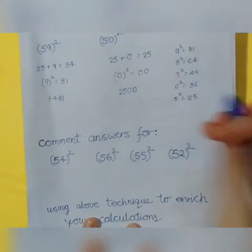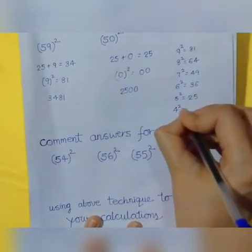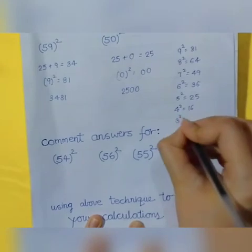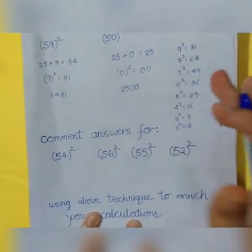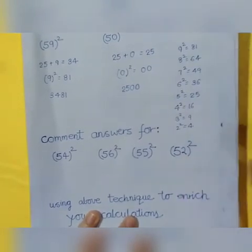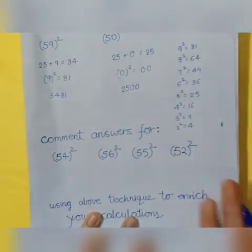After this, 4 squared is 16, 3 is 9, 2 is 4, and 1 is 1, and 0 is 0. If you remember this much, then your calculation will be easy.